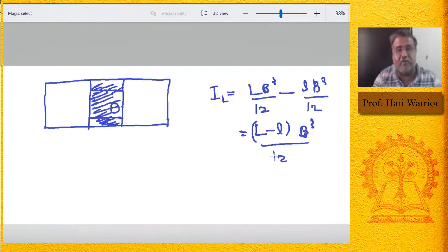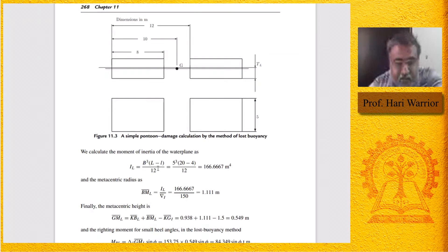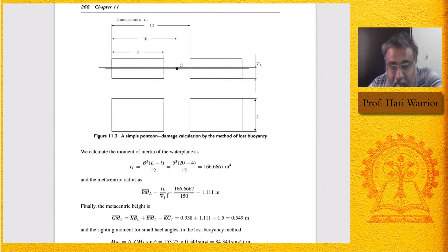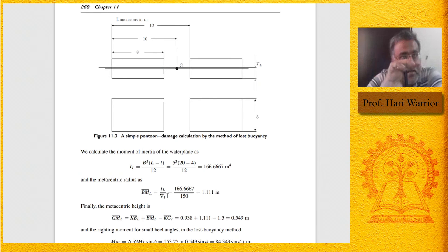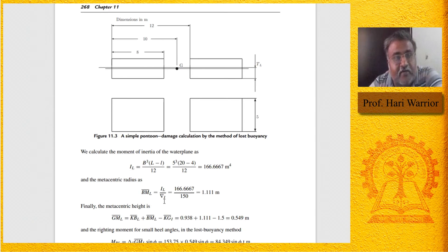So I_L = (L − l) × B³/12 = (20 − 4) × 5³/12. The metacentric radius BM = I_L / del_I. Now, the key point: del_I equals del_final. The displacement of the ship does not change in the method of lost buoyancy — this is also called the constant displacement method. The ship sinks a little to make up for the lost volume, and the displacement remains equal to the intact displacement.